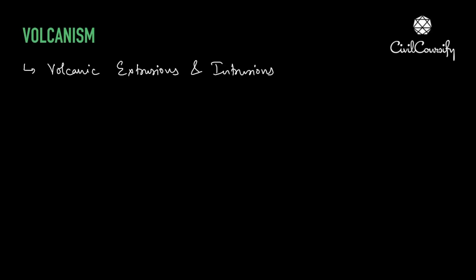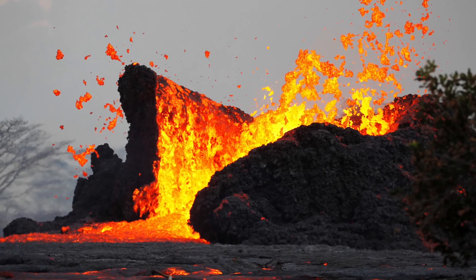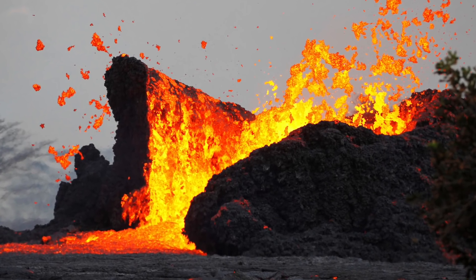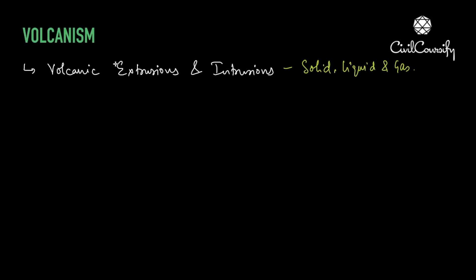Volcanic activities have a profound impact on earth's landforms. This is basically due to volcanic extrusions and intrusions, which are in solid, liquid, and gaseous state. Extrusions and intrusions are a volcanic semi-molten material which is generally magma. If it comes out of the surface of the earth and stays above the surface, this process is known as extrusion. When magma comes out of the earth's surface, we call it lava.